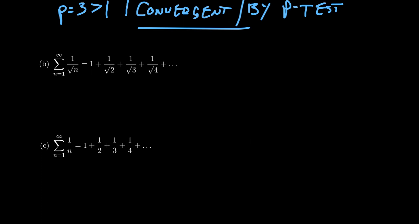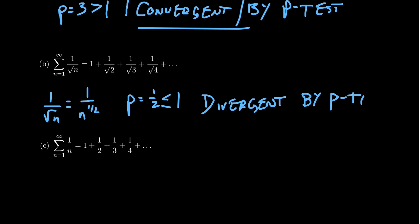Next, consider the sum from n equals 1 to infinity of 1 over the square root of n. We can write this as 1 over n to the 1/2, which is a p-series with p equals 1/2. Since 1/2 is less than 1, this series is divergent by the p-test. All we have to do is identify the parameter p for a p-series.